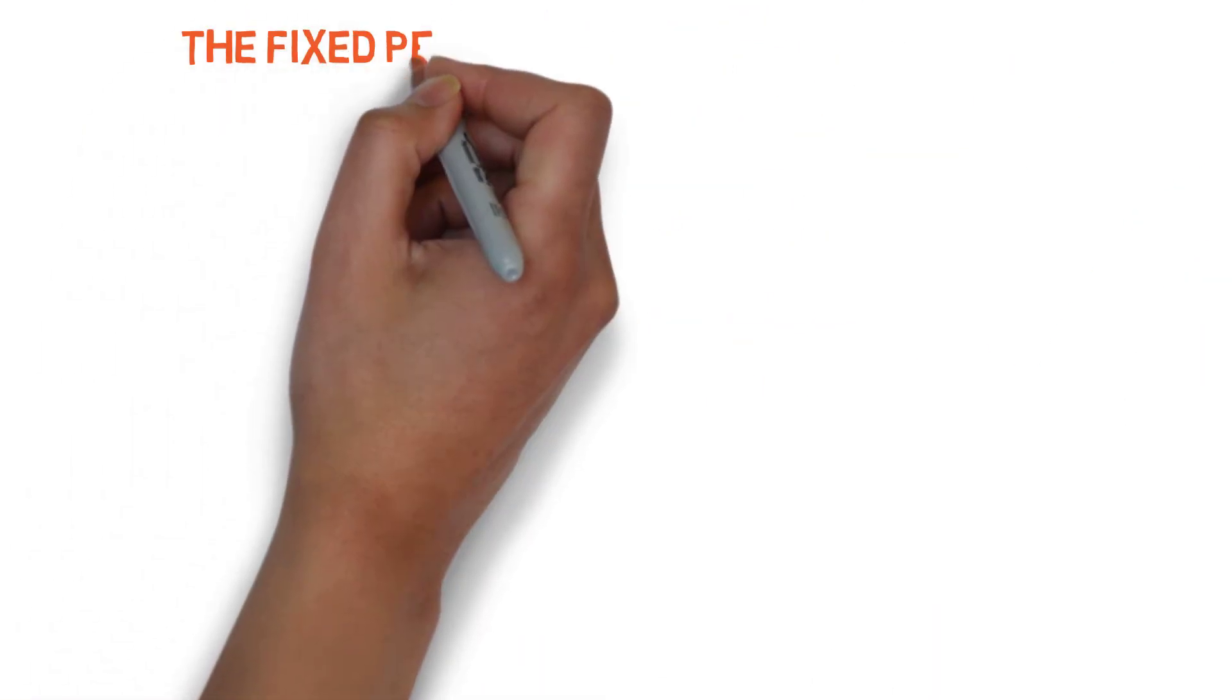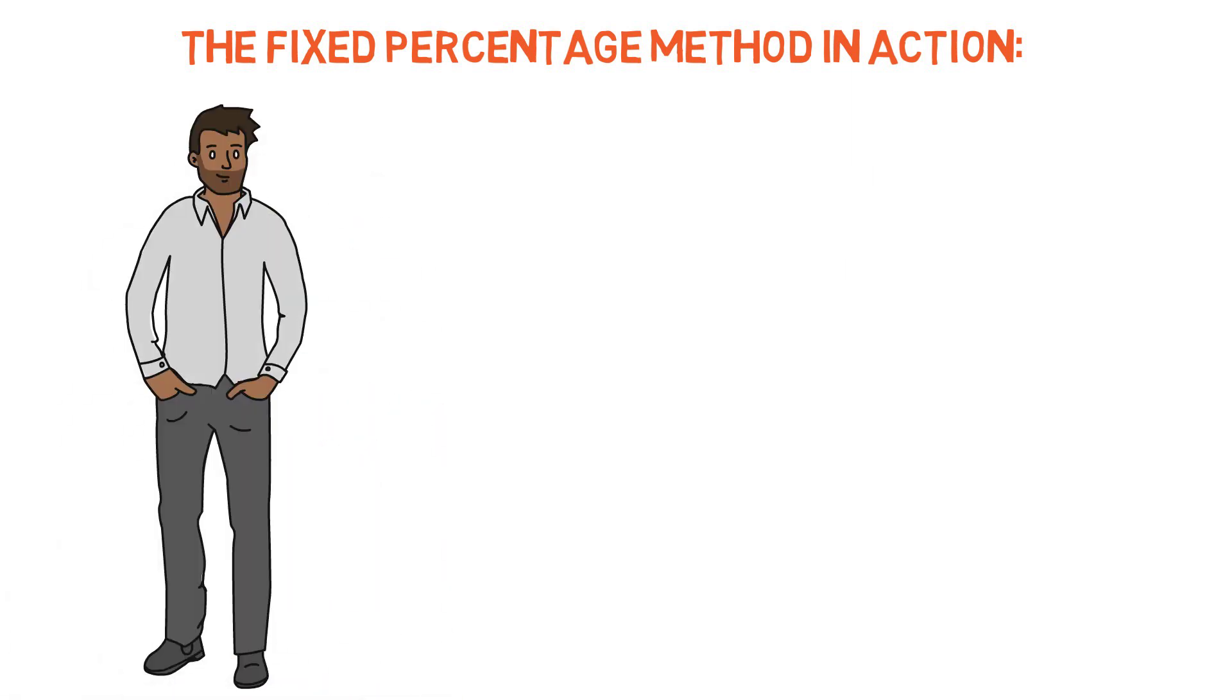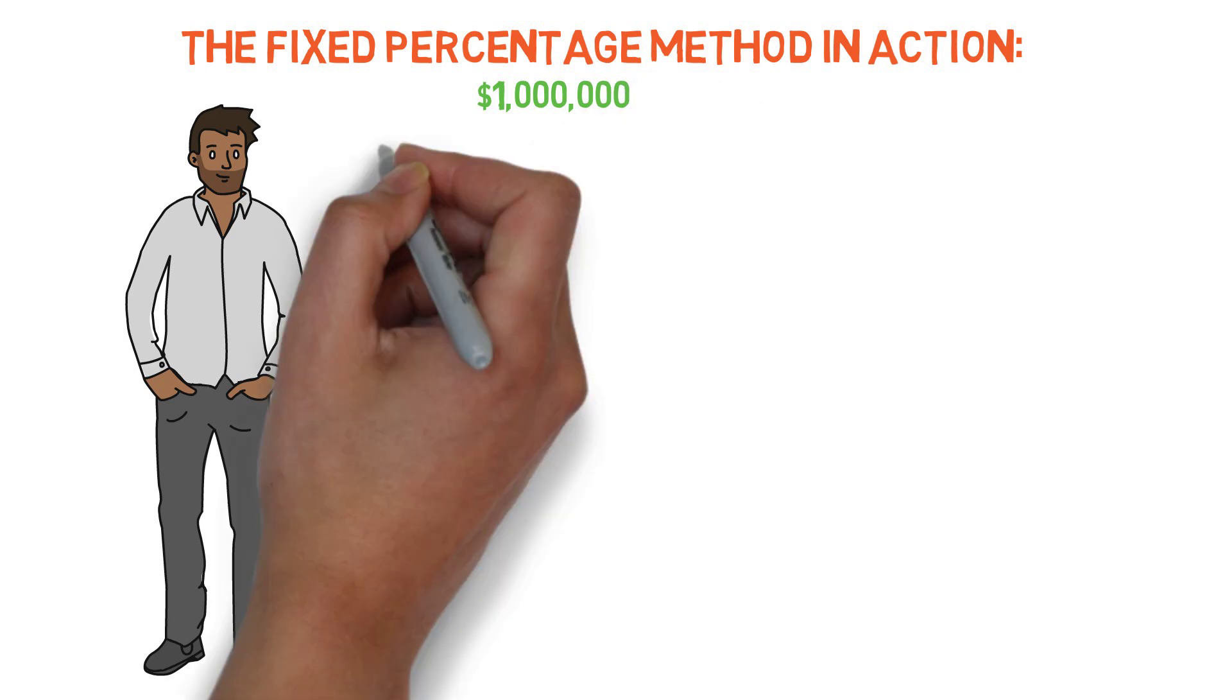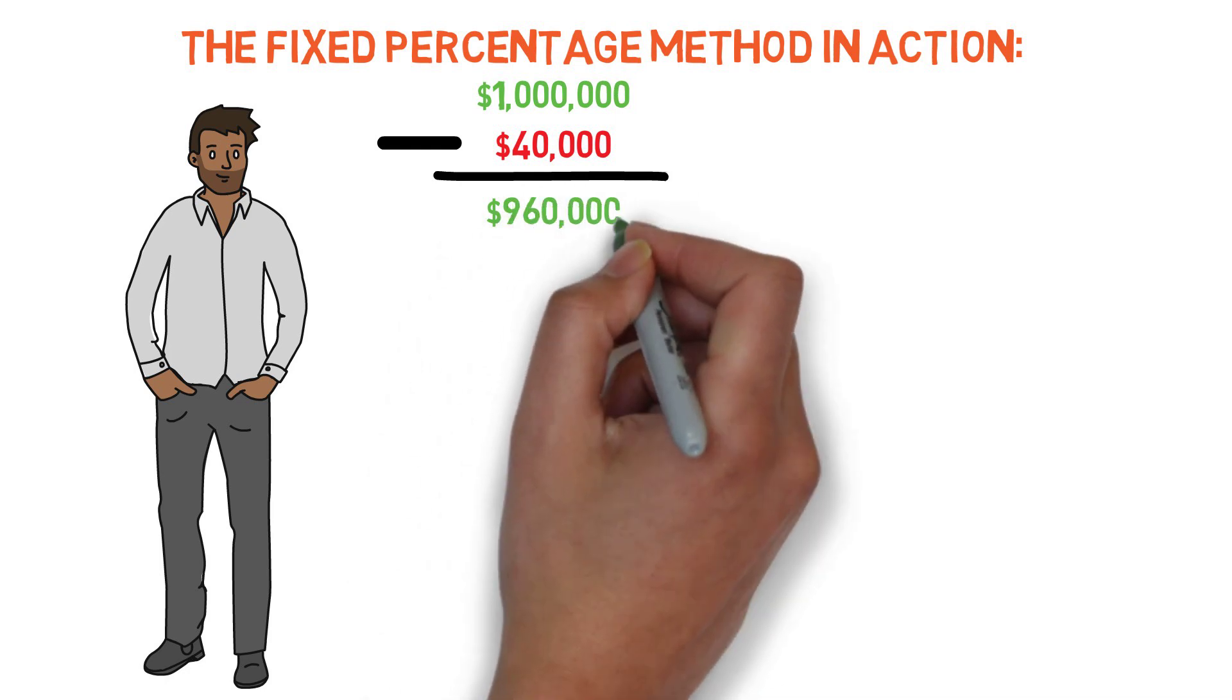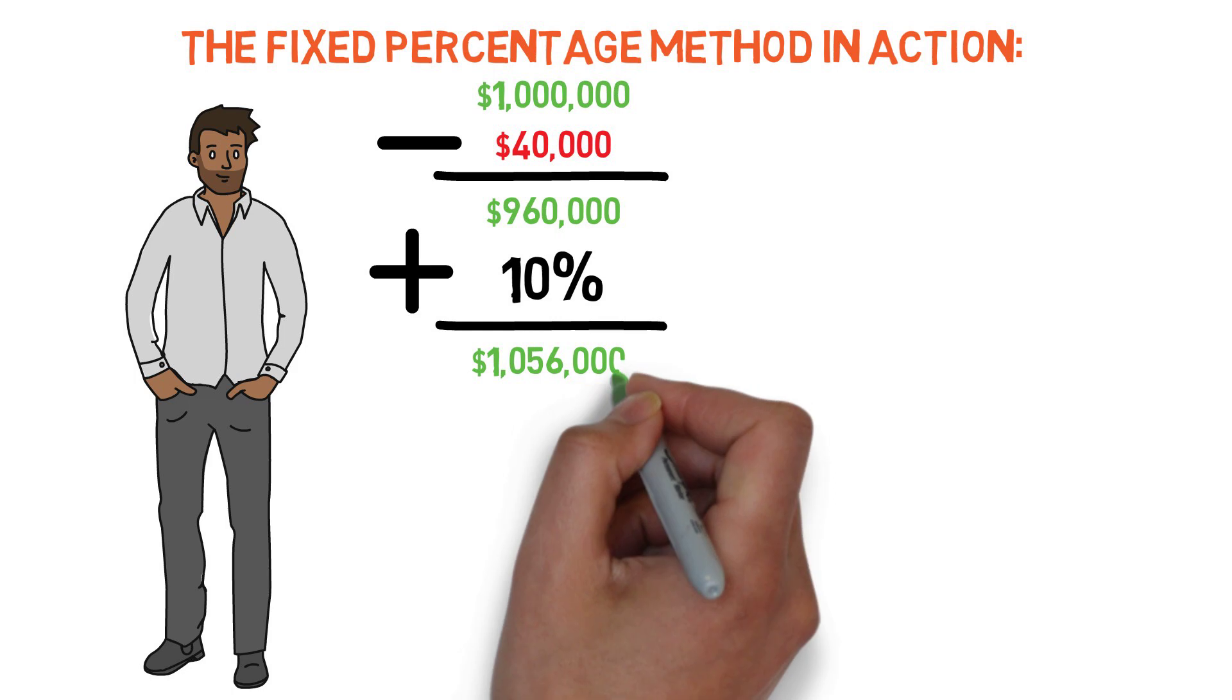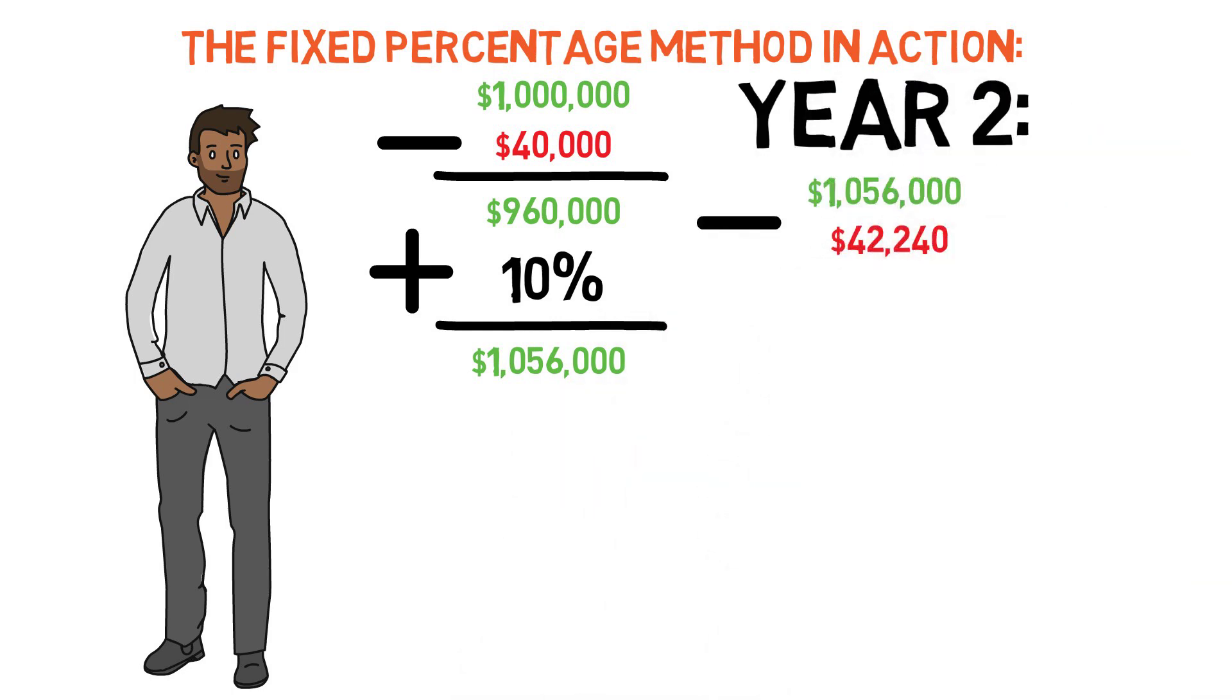Say if John wanted to withdraw 4% of his investments each year in retirement. Since the value of his investments were $1 million when he retired he would withdraw $40,000 in the first year of his retirement leaving him with $960,000 left over. If his investments grew by 10% that year the value of his portfolio would be somewhere in the neighborhood of $1,056,000 at the start of his second year of retirement and he would withdraw 4% of that or $42,240.